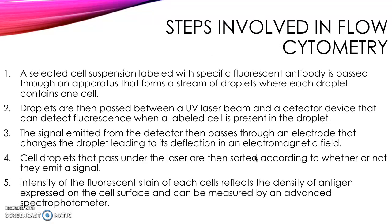The first step in flow cytometry is that a selected cell suspension labeled with specific fluorescent antibody is passed through an apparatus that forms a stream of droplets where each droplet contains one cell. In the second step, those same droplets are then passed between a UV laser beam and a detector device that can detect fluorescence when a labeled cell is present in the droplet.